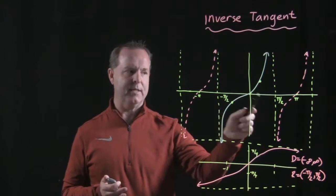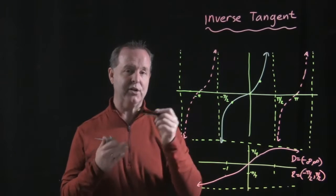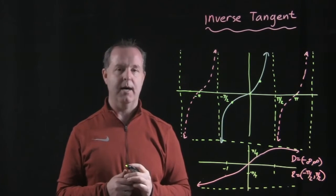Also remember that π/2 and negative π/2 were asymptotes, so the values never actually touch that value. They approach it asymptotically.